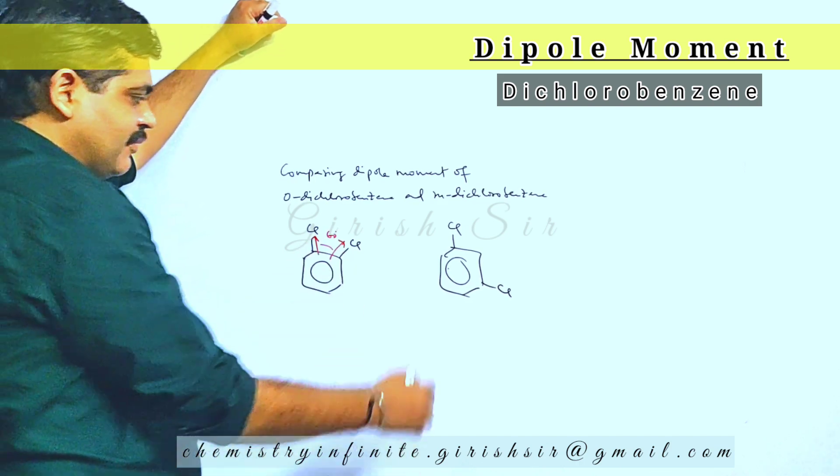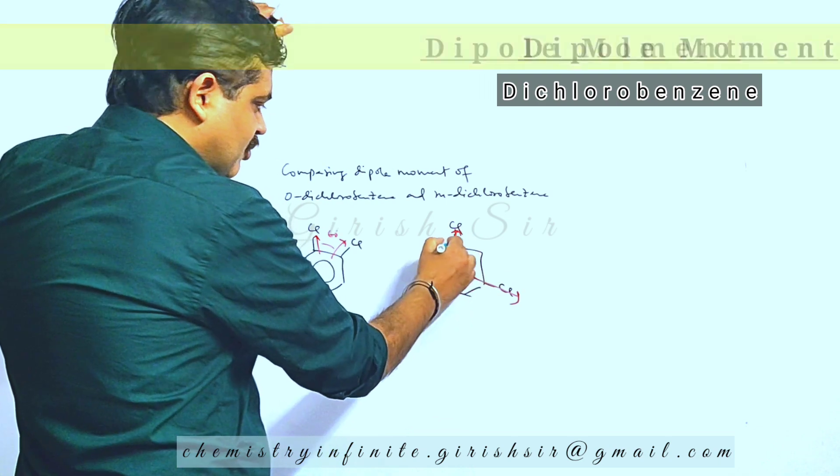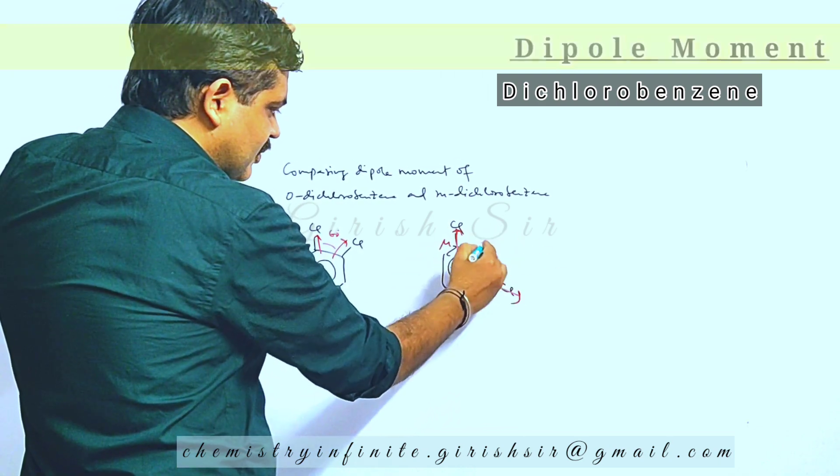With an angle of 60 degrees between them, whereas over here the two polar bonds have dipole moment mu with a bond angle of 120 degrees between them.